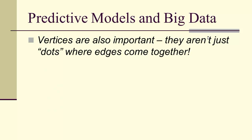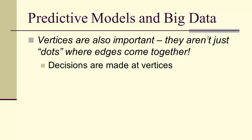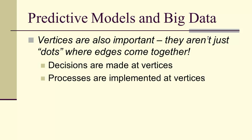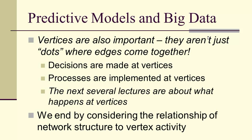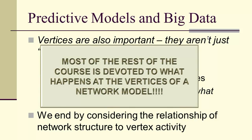What we haven't talked about are the vertices of these networks. Up to this point, they've just been dots where the edges come together. But the decisions are made at the vertices. Processes can be implemented at vertices. The next several lectures are going to be about what happens at vertices of large complex networks, or vertices of graphs, even when they're not large and complex. We'll end the course by relating the vertex activity to network structure.